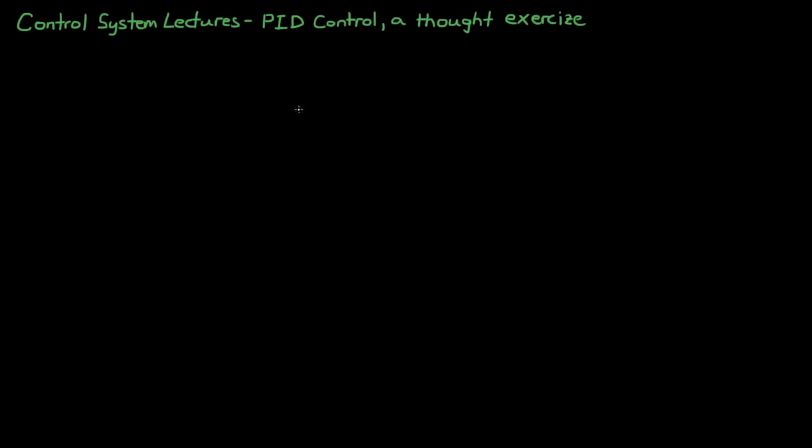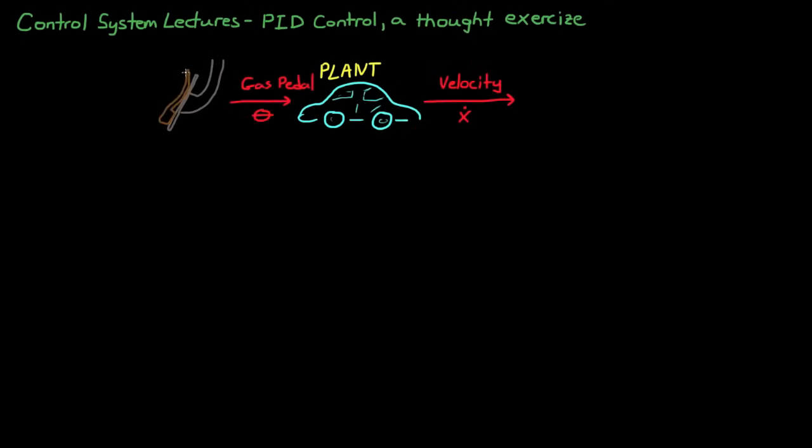For this example you're driving your car, which is the plant, and you use the gas pedal to control the velocity of the car. We'll call the angle of the gas pedal theta, where the angle of zero is when your foot isn't pressing on the pedal. Now I want to create a real simple model of the car to work off of so that if you want to verify our results of this exercise on your own, you can.